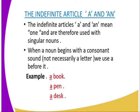When a noun begins with a consonant sound — not necessarily a letter — we use 'a' before it. For example: a book, a pen, a desk. The consonant sound in 'a book' is 'b', in 'a pen' is 'p', and in 'a desk' is 'd'.